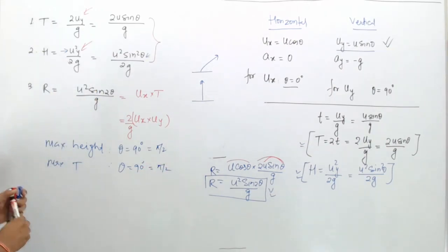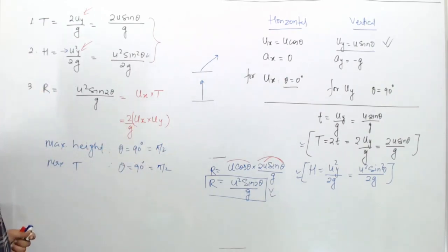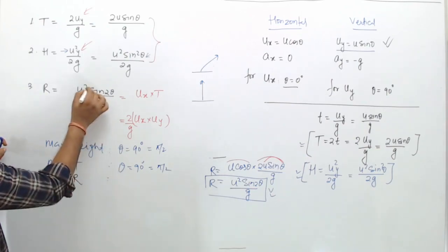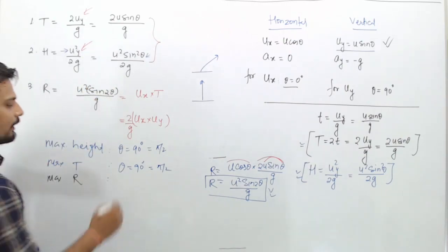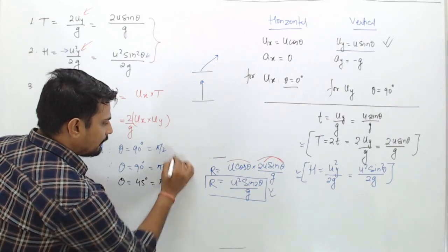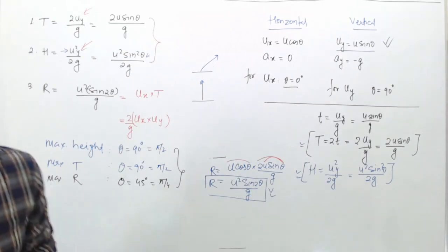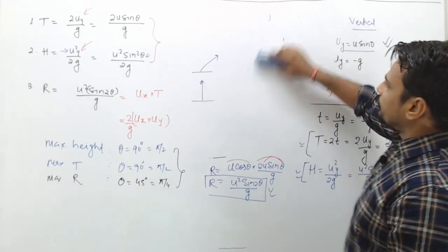For maximum range, it depends on both vertical and horizontal velocity. The range R = u²·sin(2θ)/g is maximum when sin(2θ) = 1, i.e., when 2θ = 90°, so theta = 45° (or π/4). These are small but important points to note.